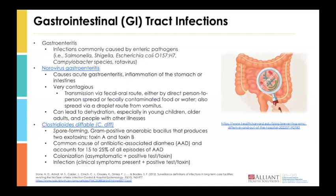Talking about GI tract infections, here are some common infections typically seen in nursing home residents. Gastroenteritis involves infections or inflammation of the stomach and intestine caused by enteric pathogens like Salmonella and Shigella. Norovirus gastroenteritis is quite common, very contagious, and can lead to dehydration especially in older adults. Norovirus can easily spread but can also be contained well by implementing transmission-based precautions. These infections could potentially lead to sepsis.